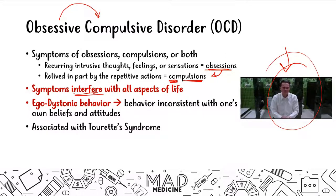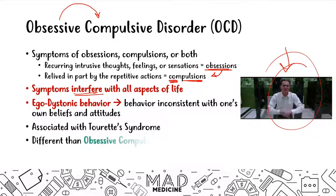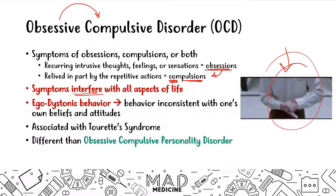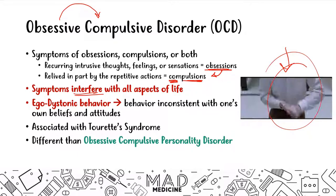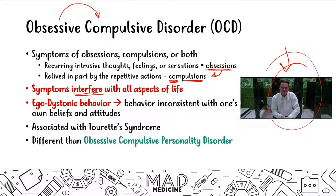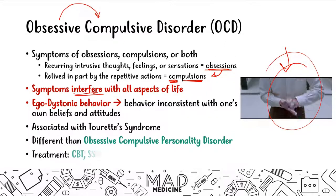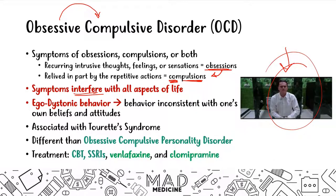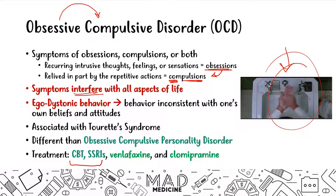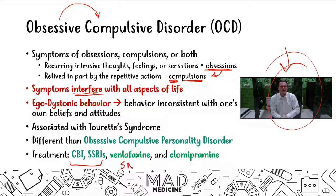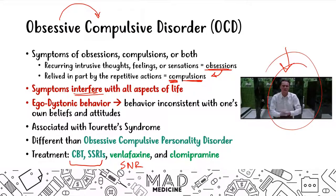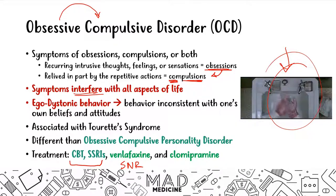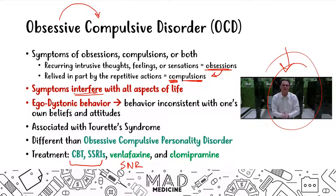OCD is associated with Tourette's syndrome — there's a high association. It's also different from OCPD. When people casually say they have OCD, they're actually describing OCPD, which is a personality disorder. A lot of people get them mixed up. The treatment for OCD is SSRIs combined with cognitive behavioral therapy — that's the first line. You can also give an SNRI like venlafaxine, or clomipramine. But mainly, you want to give an SSRI and cognitive behavioral therapy in conjunction to treat OCD.